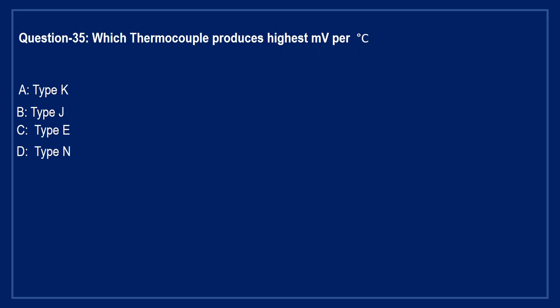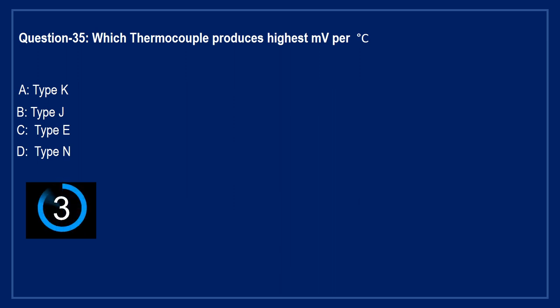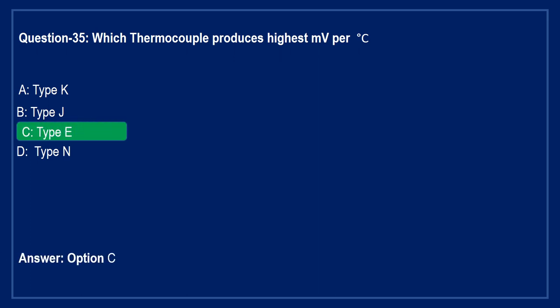Question: which thermocouple produces the highest millivolt per degree centigrade? Option A: type K. Option B: type J. Option C: type E. Option D: type N. The right answer is Option C — type E thermocouple produces the highest millivolt per degree centigrade.